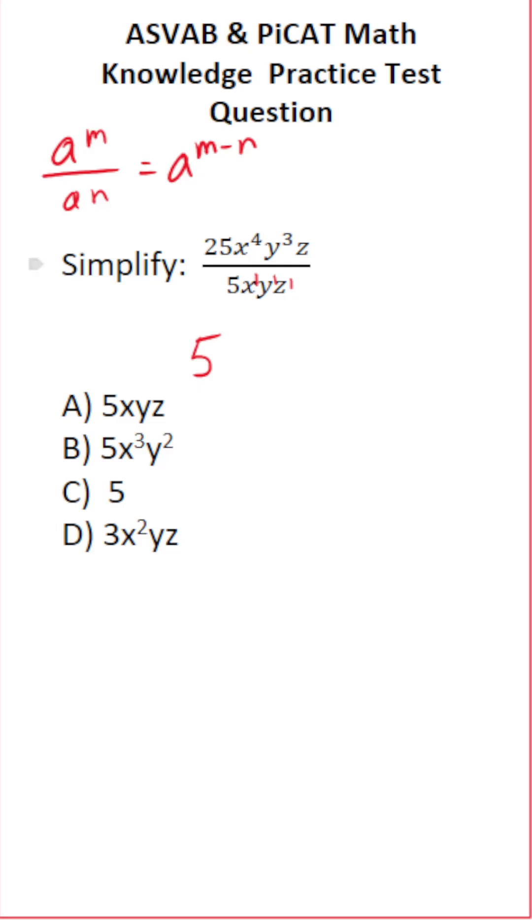So let's get started with x to the fourth over x to the first. Again we have x to the fourth over x to the first. According to the quotient rule what are we going to do? We're going to subtract our exponents. This is 4 minus 1. This becomes x to the third. Our exponent's positive so it's going to go up here in our numerator.